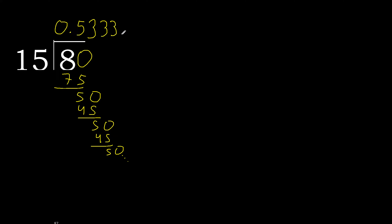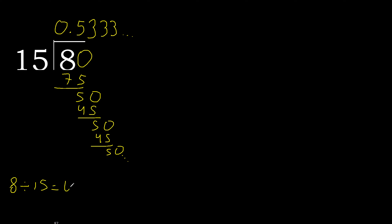Therefore 3 repeats. Finish: 8 divided by 15 gives 0.5 with 3 repeating after the point — like this: 0.5333... (3 repeat).